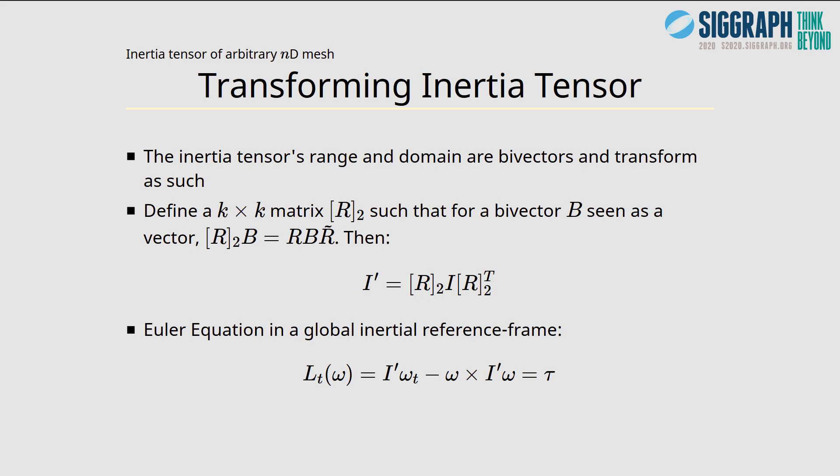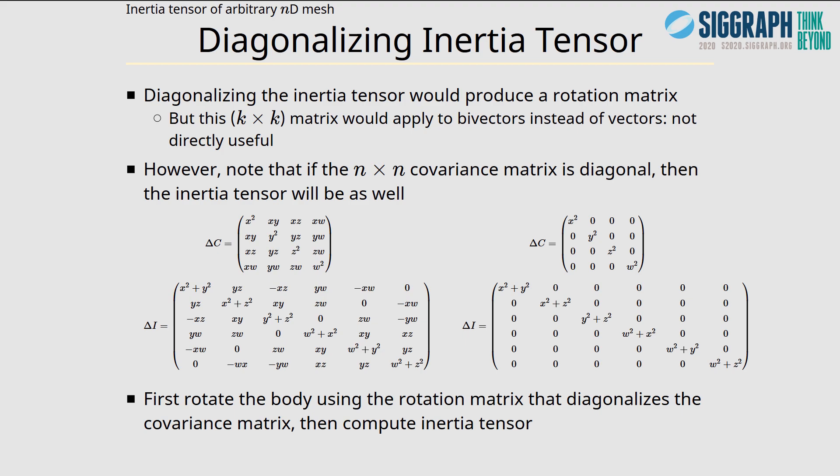Transforming the inertia tensor is slightly different in n-dimensions because the range and domains are bivectors and need to transform as such. If we have a rotation matrix or rotor, we can define a k by k matrix that transforms bivectors instead of vectors. This is the matrix we need to apply to the inertia tensor to transform it. This gives a form for Euler's equation in a global reference frame. We can't diagonalize the inertia tensor the usual way because it would produce a k by k matrix that only applies to bivectors and not vectors. However, notice that if the n by n covariance matrix is diagonal, then the inertia tensor will also be diagonal. So diagonalize the covariance matrix first and grab the rotation matrix from there, ensuring the inertia tensor will also be diagonal.